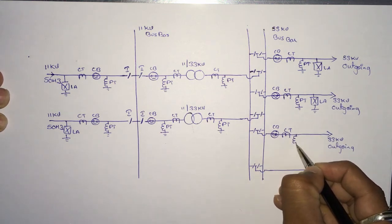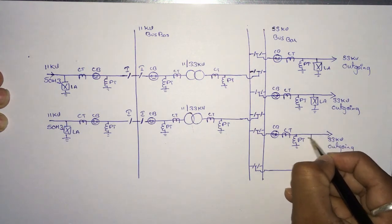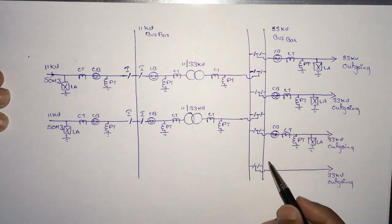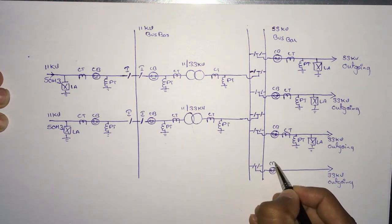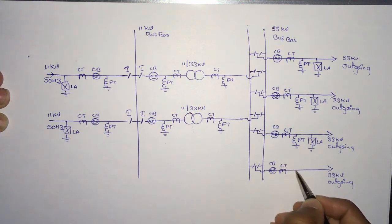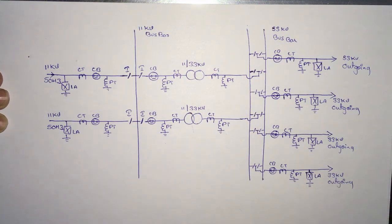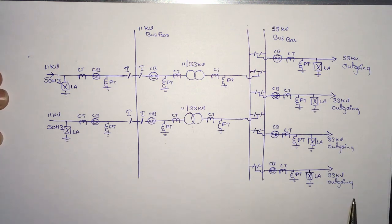For each outgoing line: CB circuit breaker, CT current transformer, PT potential transformer, and LA lightning arrester — same for the last outgoing line: CB circuit breaker, CT, PT potential transformer, and LA lightning arrester. This completes the single line diagram of the substation for the given question.